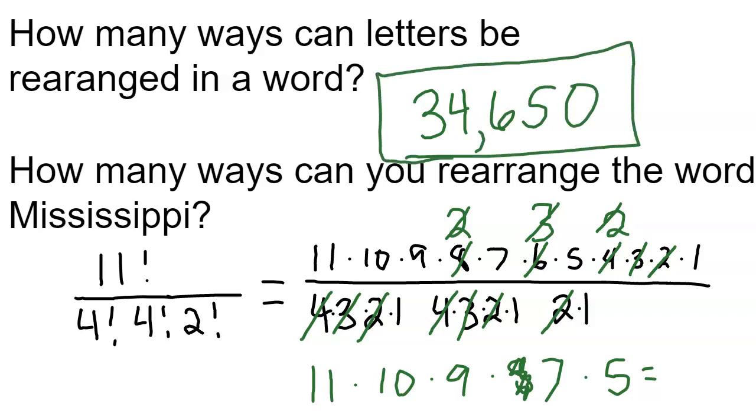34,650 ways to rearrange the word Mississippi. So, 34,650 ways to rearrange this particular word. I think a quick Google search also finds that. But if you're wanting an explanation, that's the best I can do. Hope this helps. See you next time. Ask me a question. I'm sure I'll be able to get around and answer it for you. Thanks a bunch.